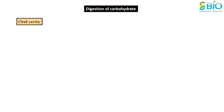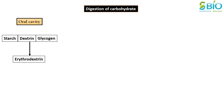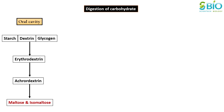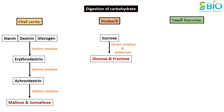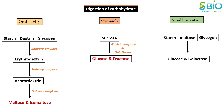Carbohydrate digestion begins in the oral cavity with partial digestion of starch by salivary amylase. About 30% of starch is hydrolyzed here into a disaccharide called maltose. A minor amount of digestion occurs in the stomach through secretion of gastric amylase and gelatinase. Carbohydrate digestion continues in the intestine by pancreatic and intestinal amylase, and a series of disaccharidase enzymes released by the intestinal epithelium digest disaccharides into monosaccharides.